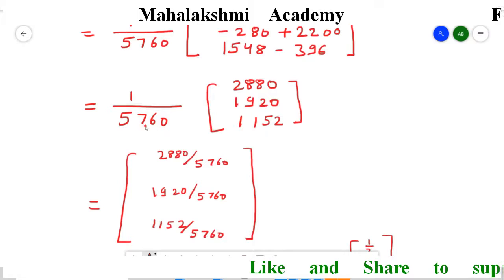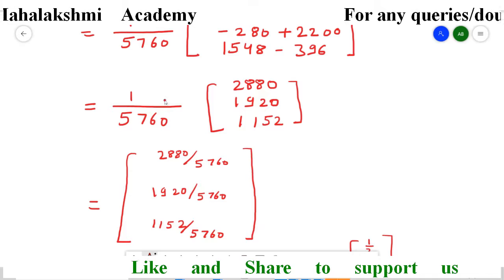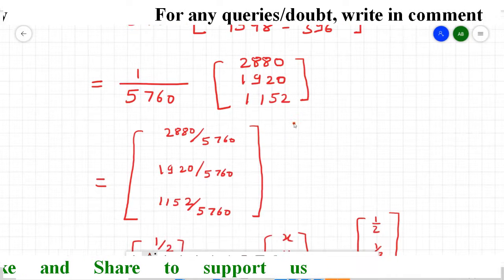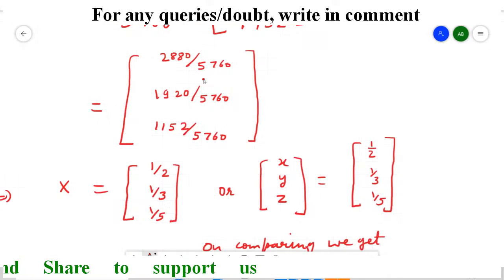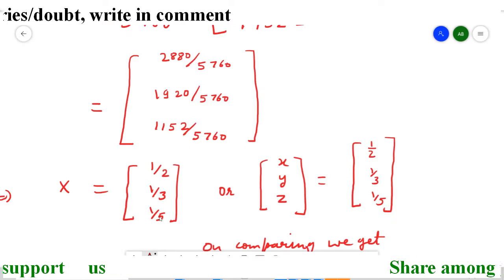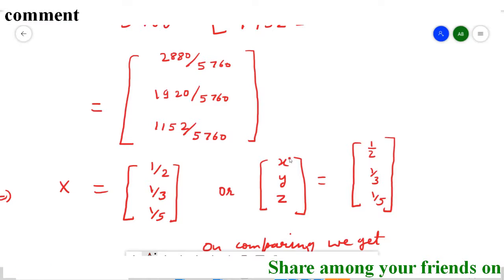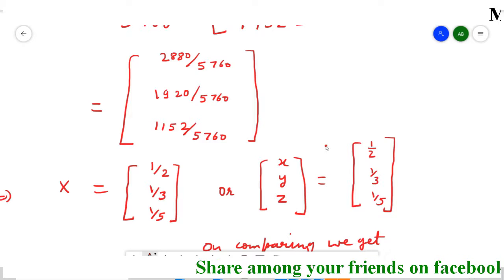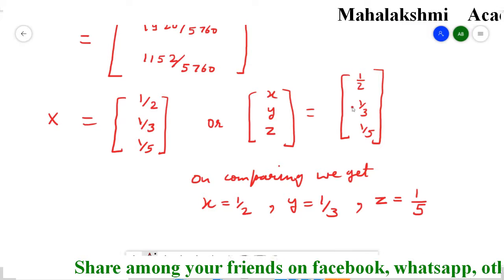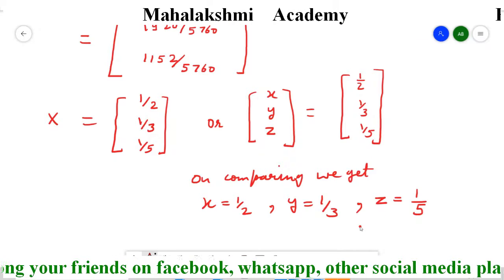After doing the addition and subtraction and simplifying, we get the result column matrix. The 5760 is outside the matrix, so when it goes inside it divides all elements. After dividing and cancelling, we get 1/2, 1/3, and 1/5. Since X is a column matrix whose elements are x, y, and z, we compare and write: x = 1/2, y = 1/3, and z = 1/5. This question is now completed.